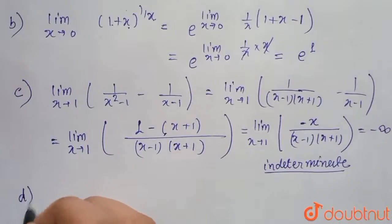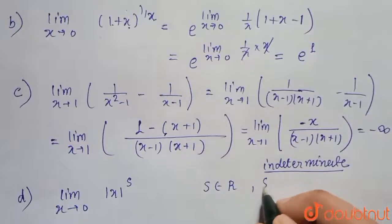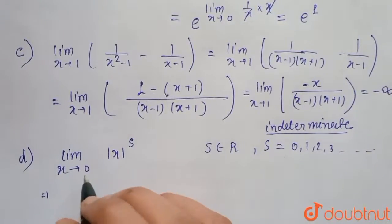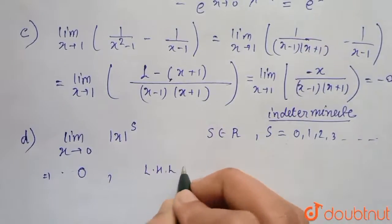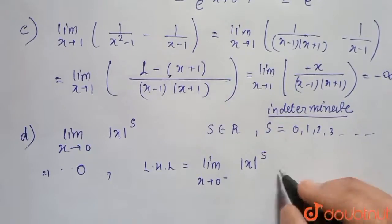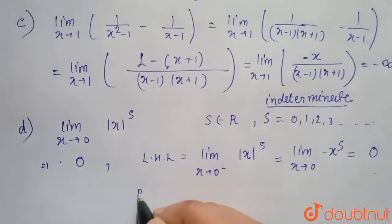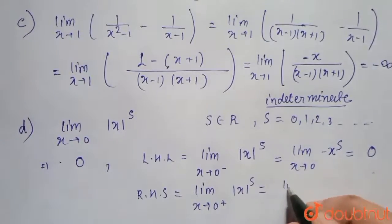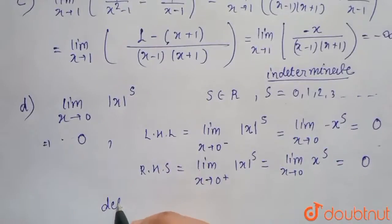Option D is the limit as x tends to 0 of |x|^s, where s is a real number (0, 1, 2, 3, ...). Putting x = 0 gives 0. Checking the left-hand limit: limit as x → 0⁻ of |x|^s = limit of (-x)^s = 0. The right-hand limit: limit as x → 0⁺ of |x|^s = limit of x^s = 0. Both limits equal 0, so this is a determinate form.